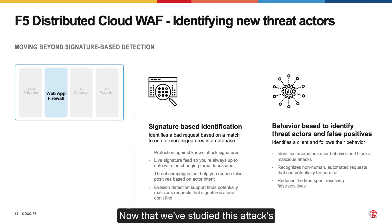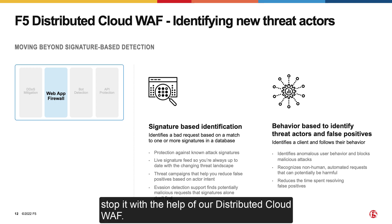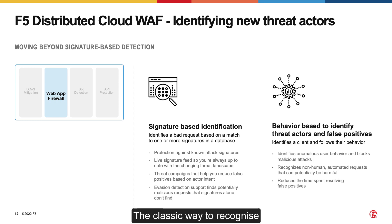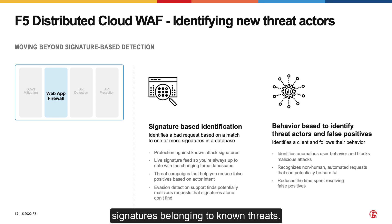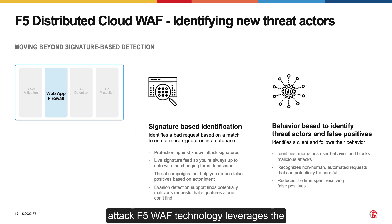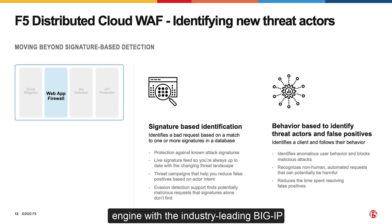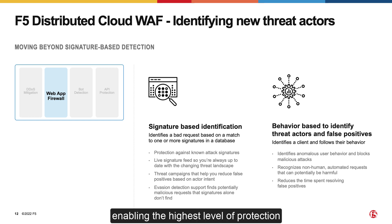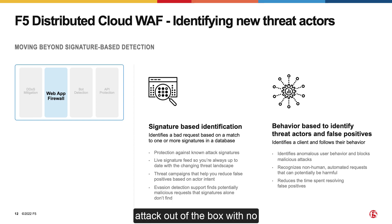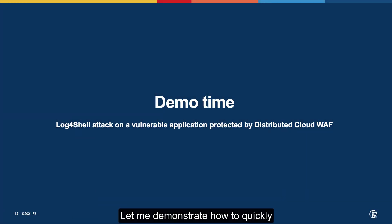Now that we've studied this attack's taxonomy, let's see how we can actually stop it with the help of our Distributed Cloud WAF. The classic way to recognize injection attacks is to check the incoming request against a database of signatures belonging to known threats. To reduce the chance of false positives and understand the specific details of each attack, F5 WAF technology leverages the threat campaigns functionality. The F5 Distributed Cloud WAF shares the same engine with the industry-leading BIG-IP Advanced WAF and NGINX App Protect WAF, enabling the highest level of protection available on the market — and it is protecting against the Log4Shell attack out of the box with no additional configuration needed.